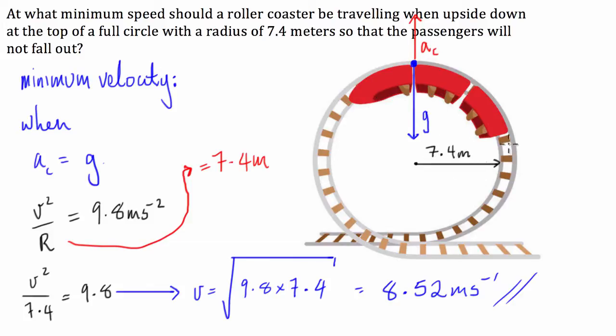Once you understand that those two have to be equal and opposite for the passengers to be safe, you can then just equate them, like I've done here, substitute in their corresponding formulas slash values, and then solve for velocity. And you're bing bang pow, you've got your answer.